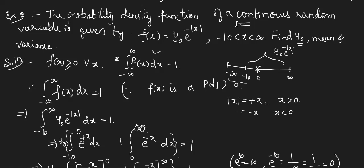The probability density function of a continuous random variable is given by f(x) = y₀·e^(-|x|) for x between -10 to infinity. With this we have to find y₀, mean, and variance.